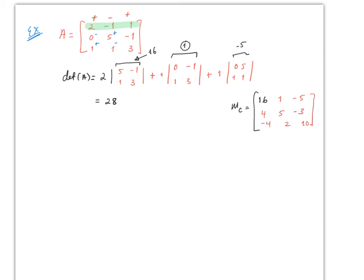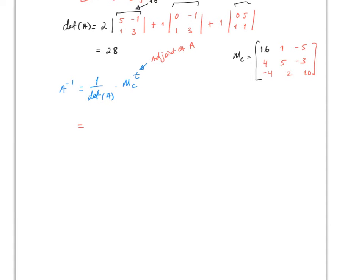The inverse of A equals 1 over det(A) times M_c^T. This part, M_c^T, is called the adjoint of A. In our particular case, A⁻¹ = (1/28) times the transpose of M_c, which is [16, 4, -4; 1, 5, 2; -5, -3, 10]. That gives us the inverse of the matrix.